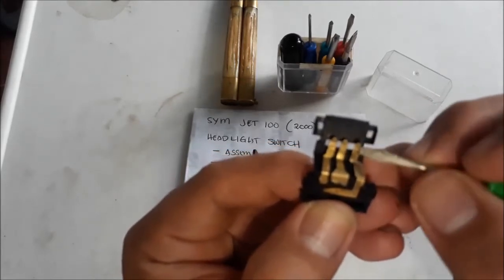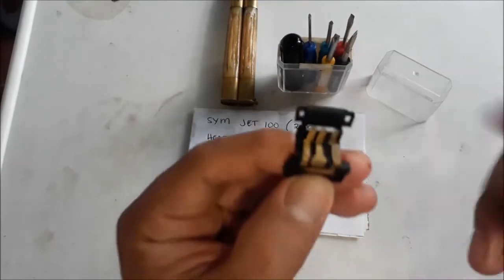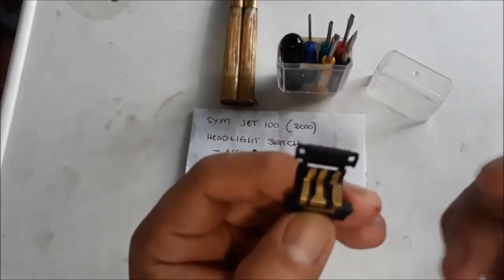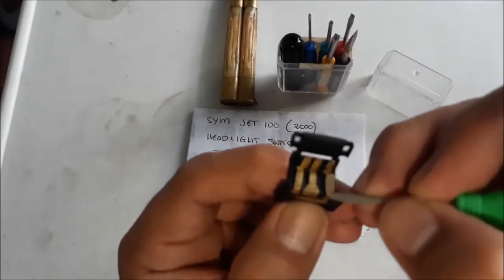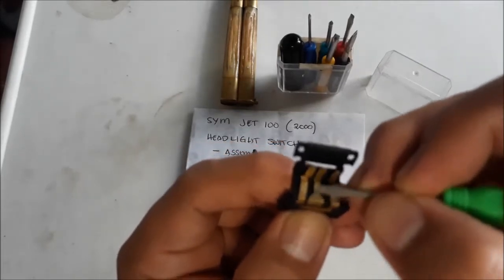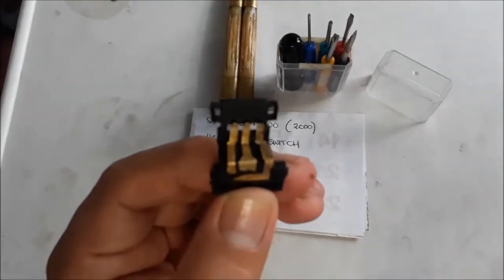You're going to need some sandpaper and just gently scratch them up until they become shiny again. You may want to squirt some light oil—usually WD-40 is fine or any kind of oil. Just scratch it up until they become shiny again.